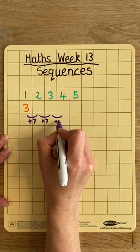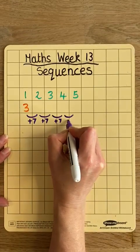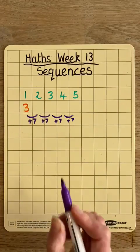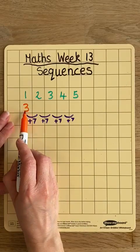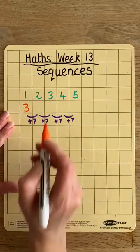I'm told that it's plus 7 each time. So how does that work? Well, 3 add 7 is 10.